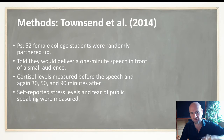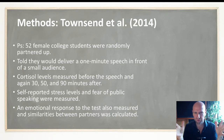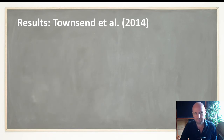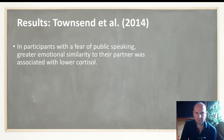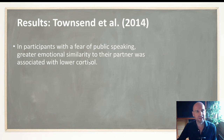They also measured self-reported stress and fear of public speaking. For the social support element, they didn't manipulate social support but measured it by how closely related someone was in their emotional responses to a questionnaire — basically, how similar they were in emotional response. Not surprisingly, higher fear of public speaking was associated with higher stress. The key finding was that greater emotional similarity to their partner was associated with lower cortisol.